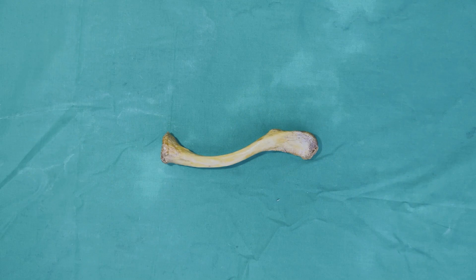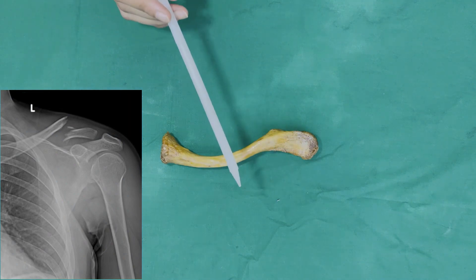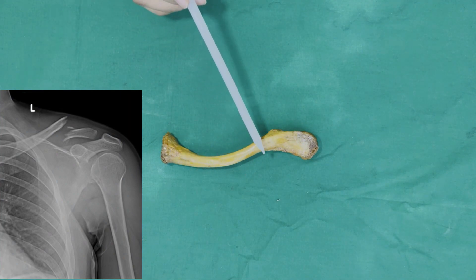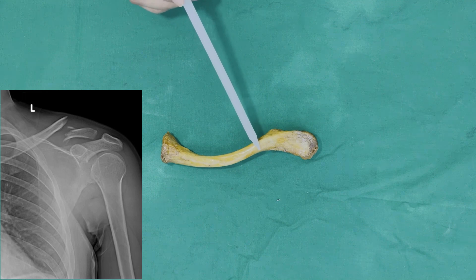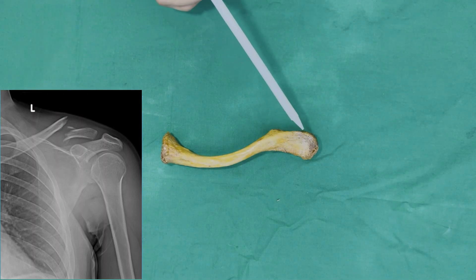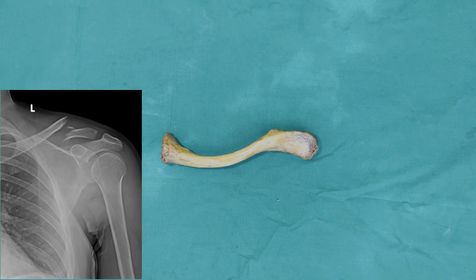Now we'll take a look at the applied anatomy of the clavicle. The clavicle is commonly fractured by falling on an outstretched hand. The most common site of fracture is the junction between the lateral one-third and the medial two-thirds, where the two curvatures of the bone meet, and this is the weakest point of the bone. The lateral fragment is displaced downwards by the weight of the upper limb, as the trapezius muscle alone is unable to support its weight.